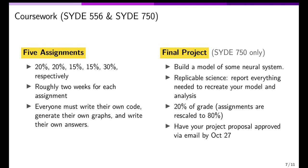The exception is for students doing the 750 graduate level version. There is also a final project where they'll have to build a model of some neural system — ideally something that connects to your broader graduate research or something you're interested in. There will also be emphasis on following good principles of replicable science. Since these are computer simulation studies, we want to set things up so that people can exactly replicate what you've done. It's one of the nice things about computational modeling that replication is even possible.